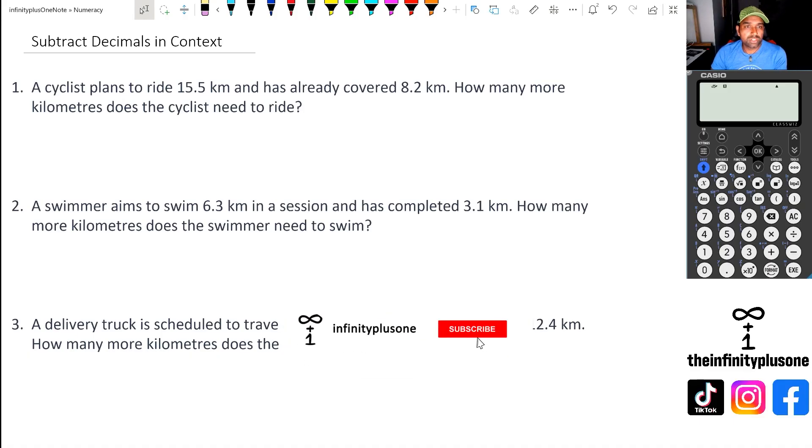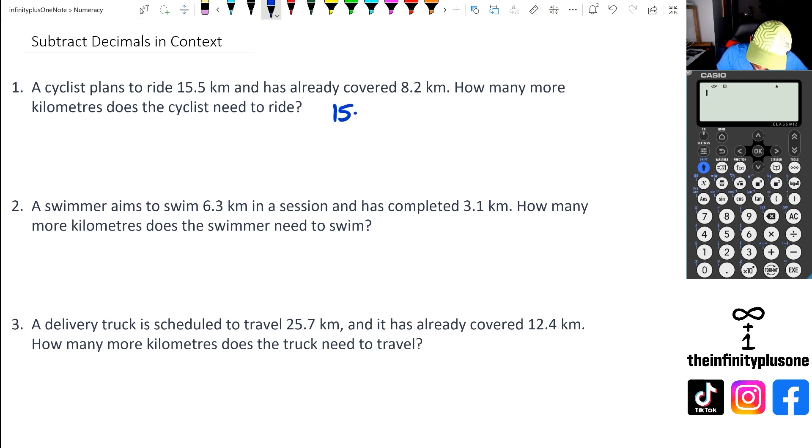All right, so the first question is we've got a cyclist that plans to ride 15.5 km and has already covered 8.2 km. How many more kilometers does the cyclist need to ride? So we've got 15.5 and we're going to take away 8.2 from this. Now, once again, as I said in the previous video, you can actually use the calculator for this, but for this purpose, I'm just going to do it manually.